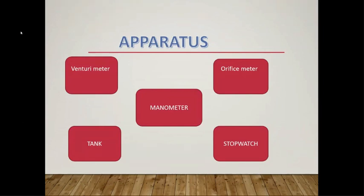The apparatus used in this experiment includes the venturi meter, orifice meter, manometer, tank, and stopwatch. The manometer is an instrument for measuring the pressure acting on a column of fluid, consisting of a U-shaped tube of liquid. The stopwatch is used to measure timing.